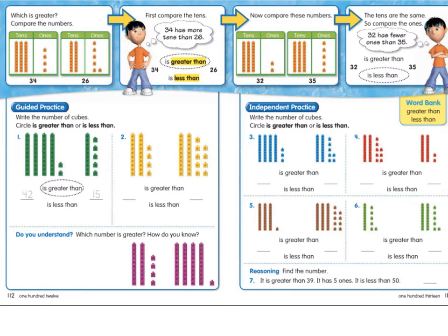Now let's go to the inside. This is guided practice. I'm going to do this with you. So write the number of cubes and circle is greater than or is less than. You're using these models right here to compare. It should make it easier because more of the tens, that's going to be a bigger number. Number one. I'm going to count. 10, 20, 30, 40, 41, 42. So that number is 42. And this is 10, 11, 12, 13, 14, 15. Well, that's pretty easy. There's four tens and only one ten on this side. So I know that four tens is greater than one ten. 42 is greater than 15.